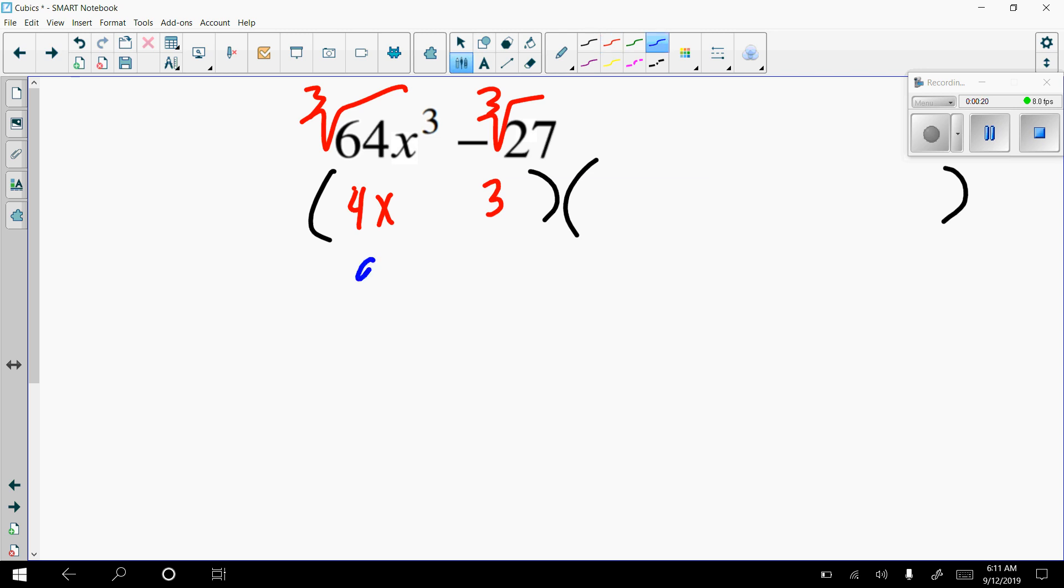So then the pattern says if this is a and this is b, this is a times a, a times b, and then b times b.